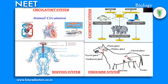Uricotelic means the excretory product is uric acid — examples: insects, terrestrial crustaceans, lizards, snakes, birds, etc. Excretory organs are absent in organisms where the organization level is below the tissue level. Each individual cell takes part in excretion. In animals like sponges and cnidarians, all cells are in contact with water and excretion occurs by the general body surface.